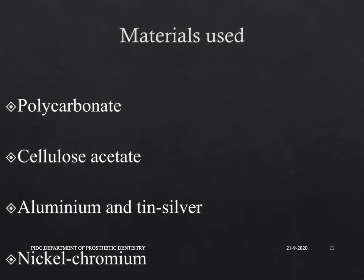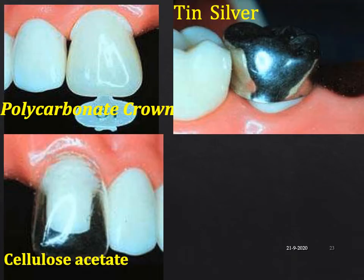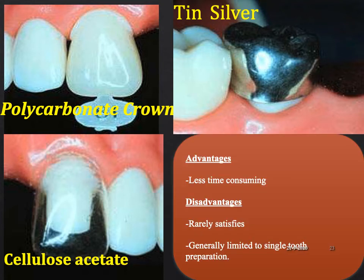Materials used in preformed restorations include polycarbonate, cellulose acetate, aluminum, tin-silver, and nickel-chromium. The advantage of preformed restorations is that they are less time consuming. The disadvantage is that they rarely satisfy the patient's needs and are generally limited to single tooth preparations.